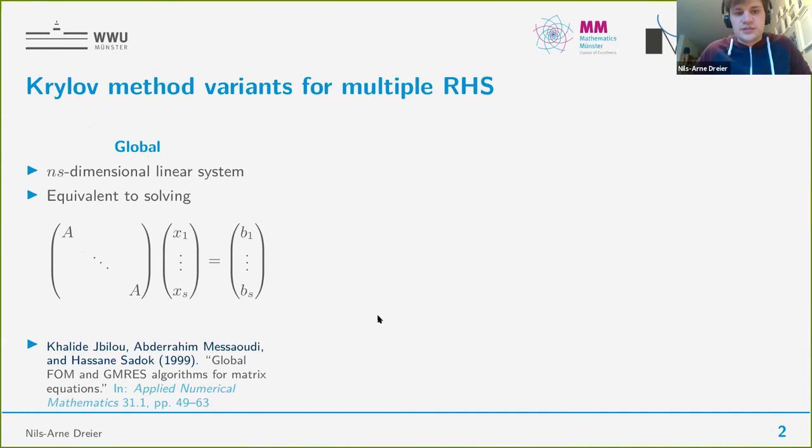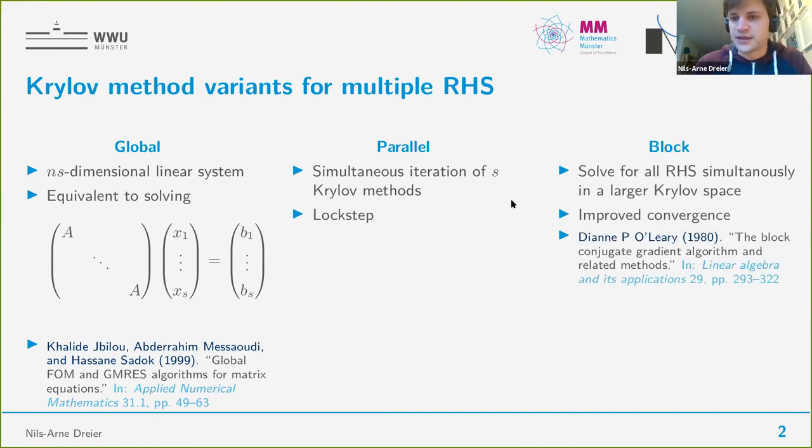When we look in the literature, we find several approaches to apply Krylov methods on this kind of system. The first approach is a so-called global method. That means we consider all the system as one large linear system, an N times S dimensional system. Another approach is the so-called parallel method. That means we have S parallel running Krylov methods executed simultaneously in kind of a lock step, so all iterations are carried out simultaneously.